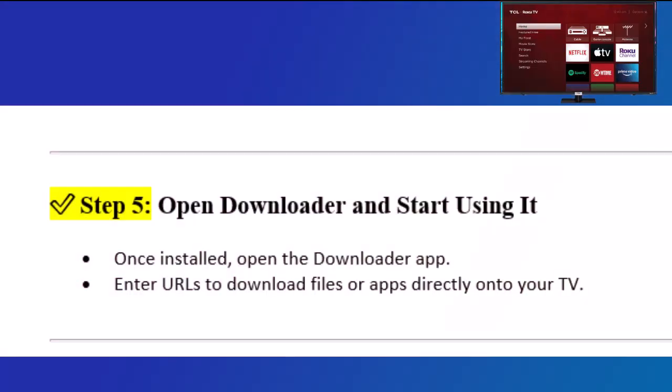Step 5: Open Downloader and start using it. Once installed, open the Downloader app. Enter URLs to download files or apps directly onto your TV.